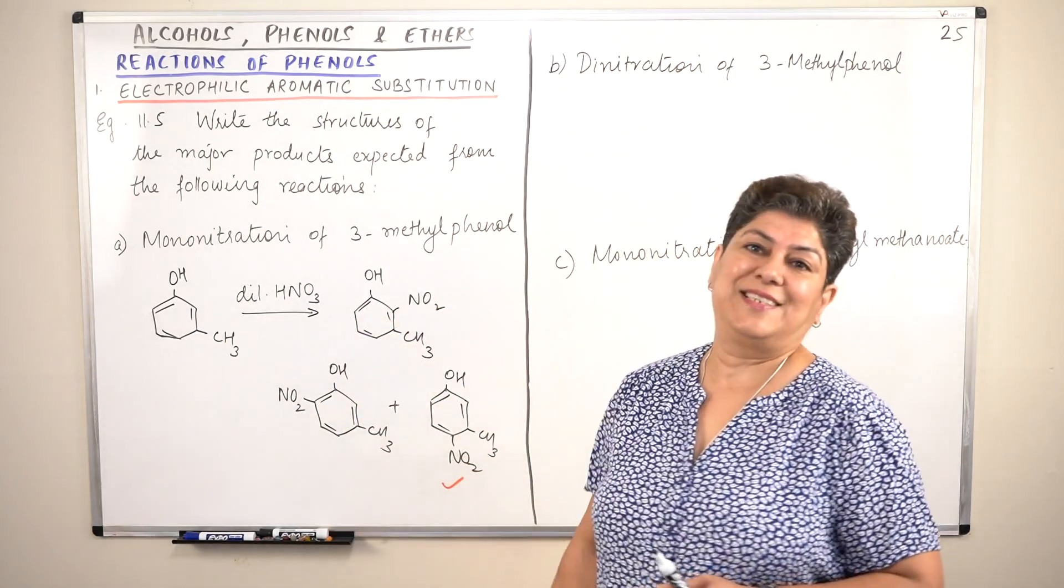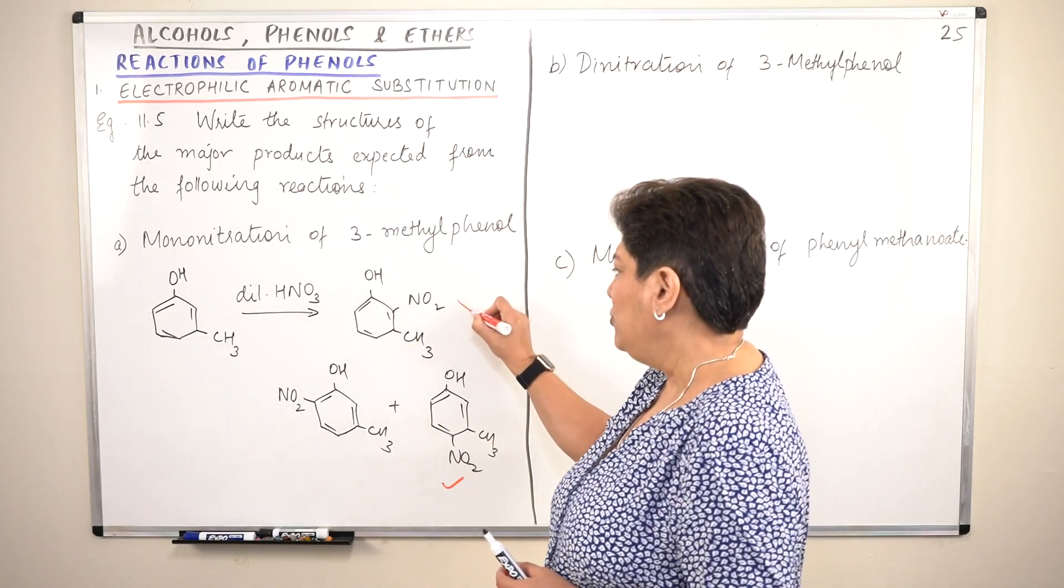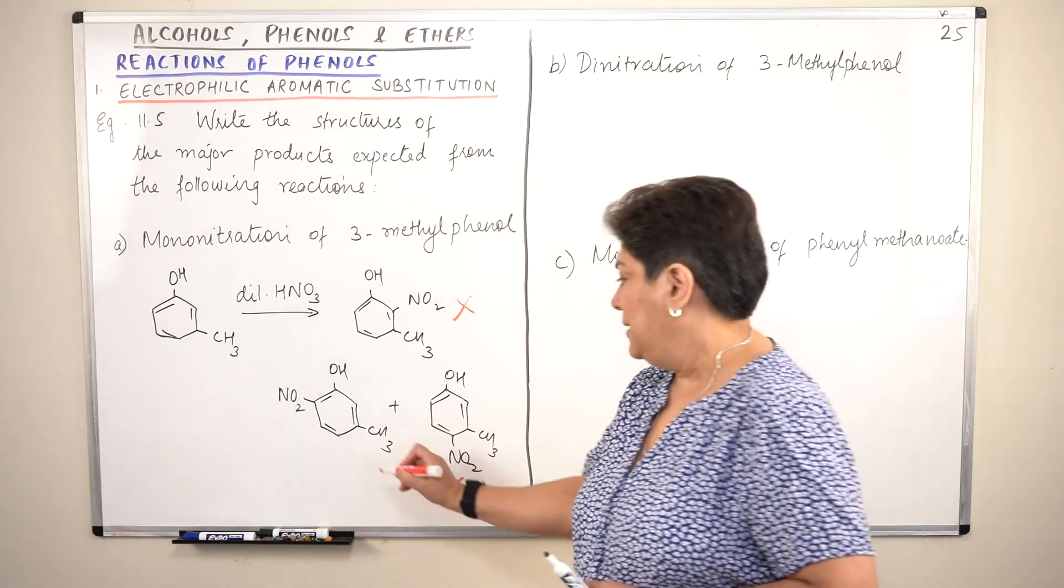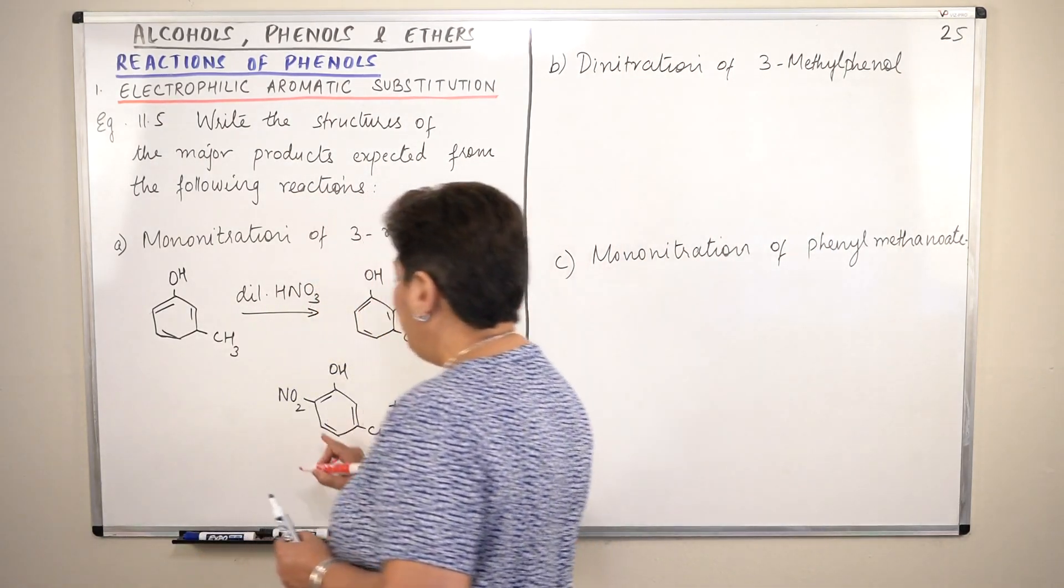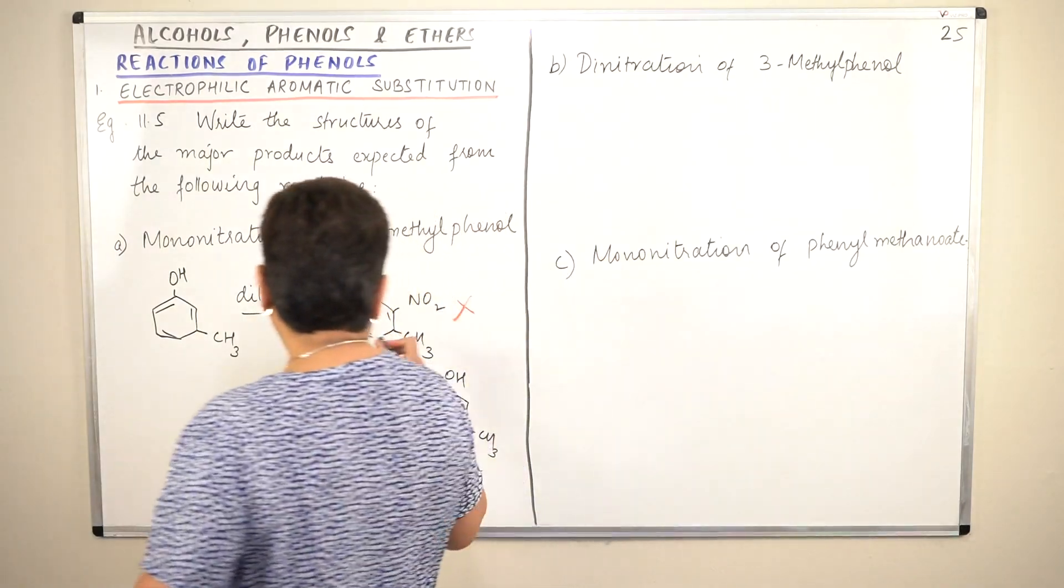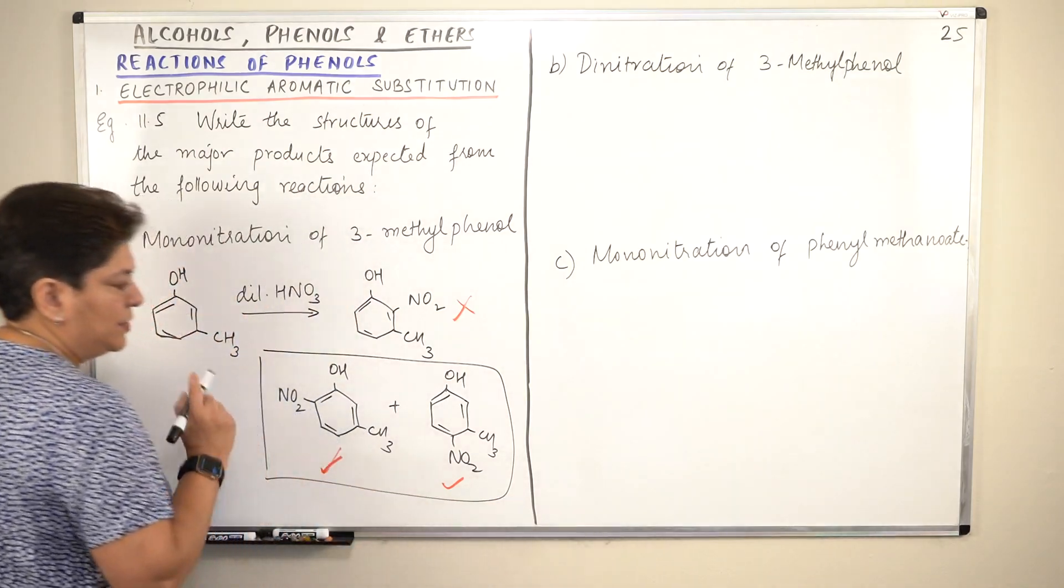In this there is least distance. So this would not be very stable. Therefore this will be a minor product. This will be a major product and so will this be. So you have two major products. So your answer will only include this part. This is your answer.